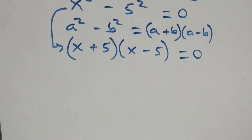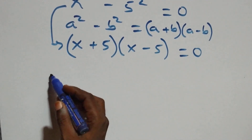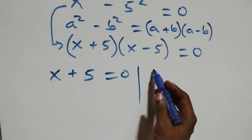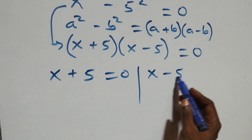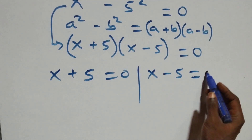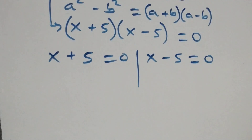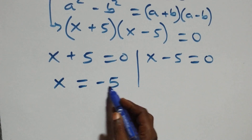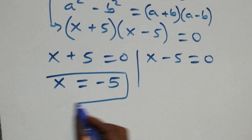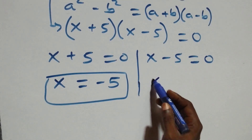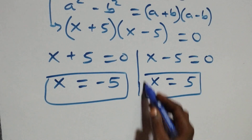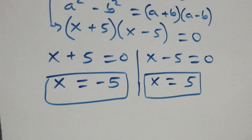The next step, we have two cases: x + 5 equals to 0, or x − 5 equals to 0. Solving gives us x equals to −5, which is a real solution, and also x equals to 5, which is also a real solution. So we have two real solutions from here.